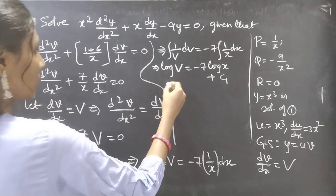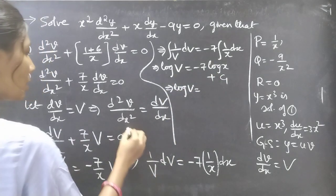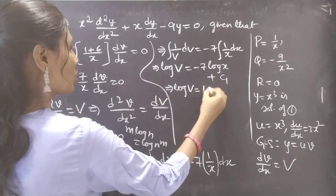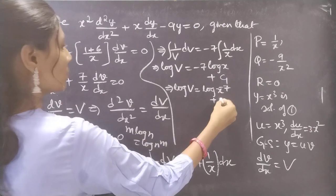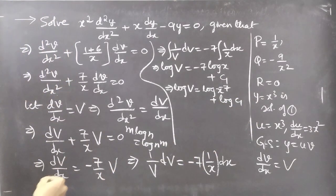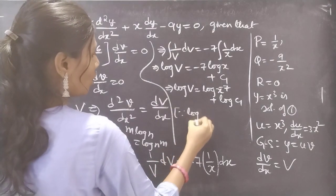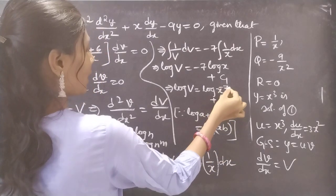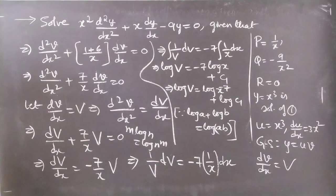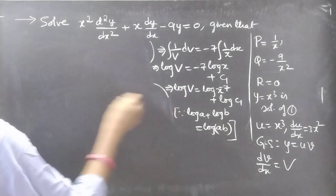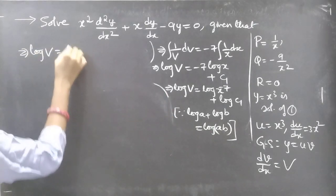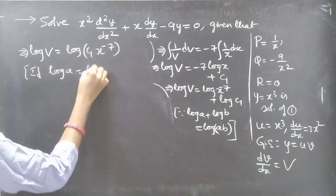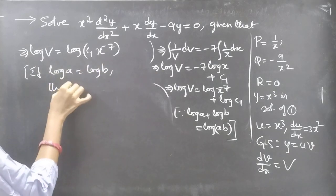Using the log rule m·log n = log(nᵐ), we write −7 log x as log(x⁻⁷). So log V = log(x⁻⁷) + log c₁ = log(c₁ x⁻⁷). Since log a = log b implies a = b, we get V = c₁ x⁻⁷.